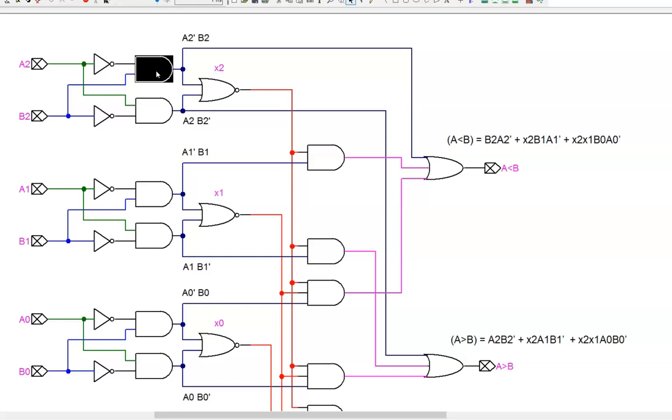The second case is if A2 equals B2 AND A1 is less than B1. A2 equals B2 is provided by this X2 wire. A1 is less than B1 is provided by this A1 prime and B1 wire. The AND gate ensures that both statements are true, and that result is passed to the OR gate.